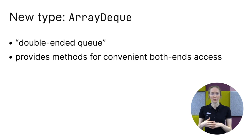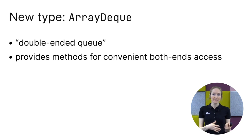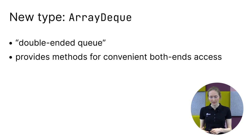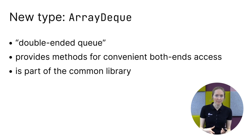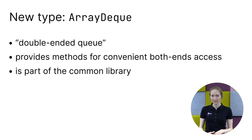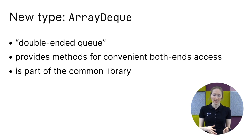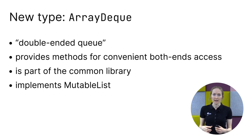The next topic is a new type, ArrayDeque, which is now stable in Kotlin 1.4. It represents a double-ended queue and provides methods for convenient and fast access to the contents from both ends. ArrayDeque in Kotlin is part of the common library, so you can use it in common code in multiplatform projects as well. If you use Kotlin for JVM, you might have already used the Java ArrayDeque class. Kotlin's ArrayDeque is a different implementation, also available for Kotlin/JS and Kotlin/Native. Kotlin ArrayDeque implements the mutable list interface, because it can at times be convenient.